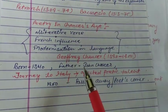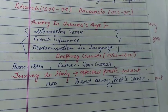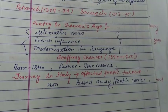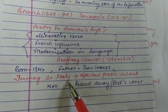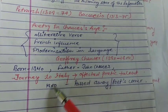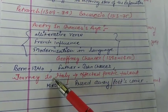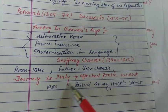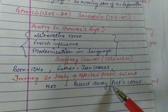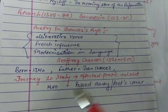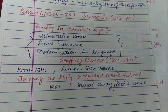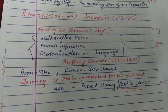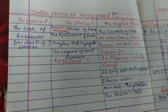Geoffrey Chaucer lived from 1340 to 1400. He was born in 1340 and his father's name was John Chaucer. His journey to Italy affected his poetic talent the most, as he traveled to many countries for administrative jobs working with kings. He passed away in 1400 and is buried in Poets' Corner — remember this.